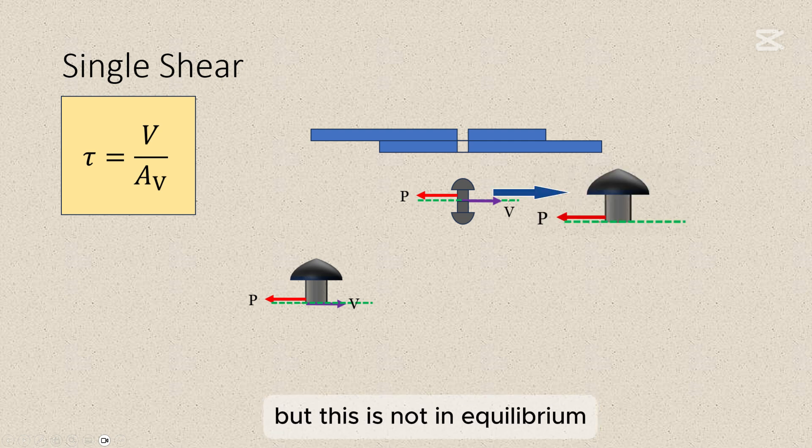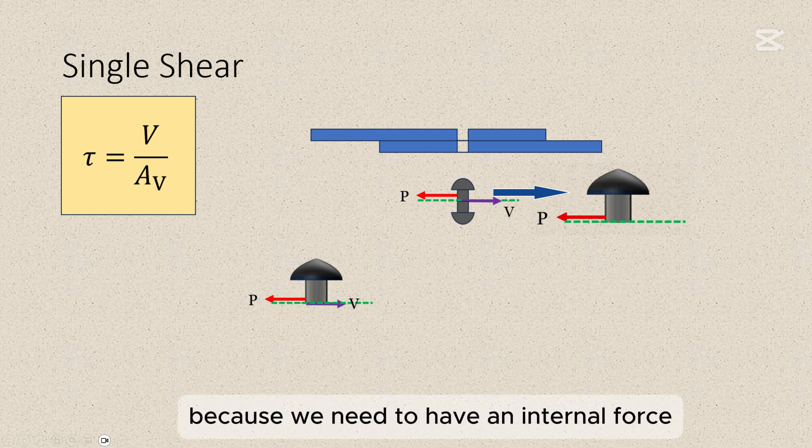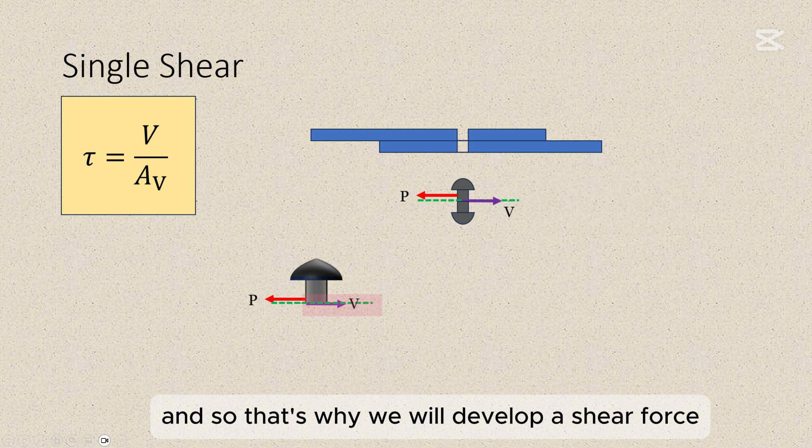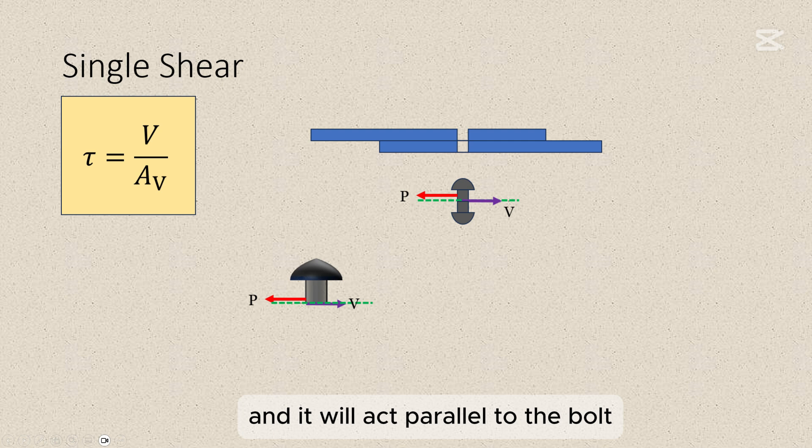But this is not in equilibrium because we need to have an internal force resisting this load. And so that's why we will develop a shear force, this is the resulting internal force, and it will act parallel to the bolt.